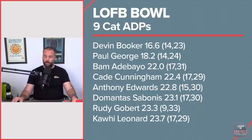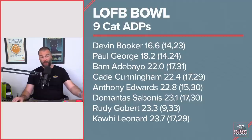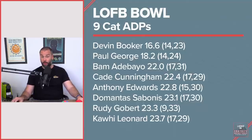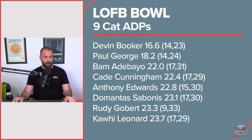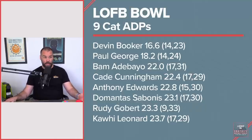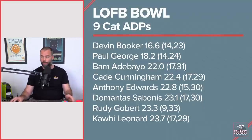Kawhi made it into that second round group with a 23.7 ADP. The highest Kawhi went was 17; I thought he might sneak into the 15 spot but he didn't, and he fell as low as 29. People are feeling more confident with him now — he played in the preseason. There were people two months ago unsure if Kawhi would be ready for the start of the year, which was always insane. But we actually saw him on the court and now we're ready to go.